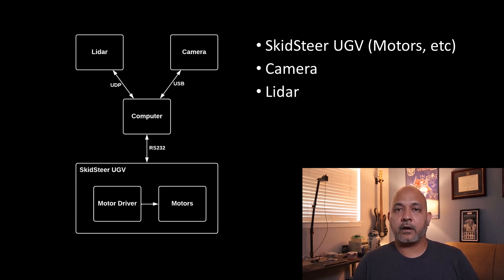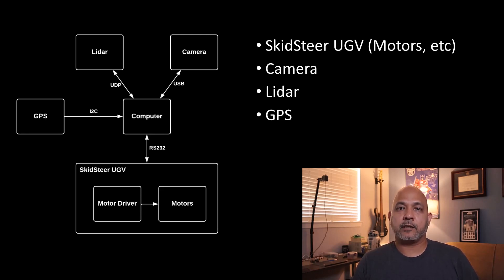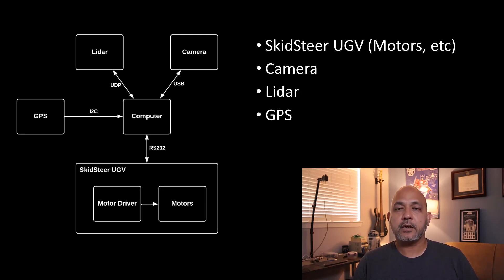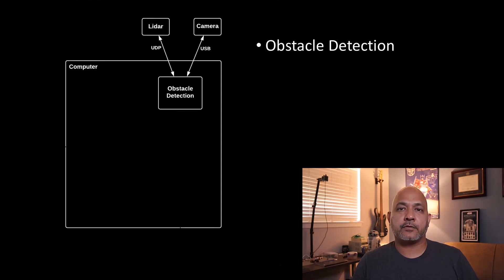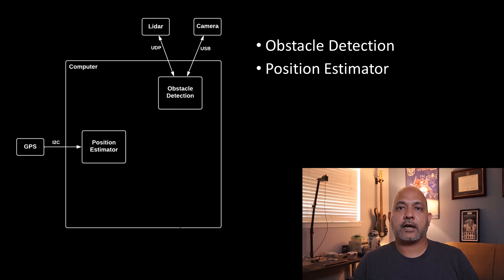I have a LiDAR that's connected using UDP, and a GPS receiver that's connected using an I2C bus. For the software, I have an obstacle detection algorithm that's using the LiDAR and the camera, and a position estimation algorithm that's using the GPS receiver.